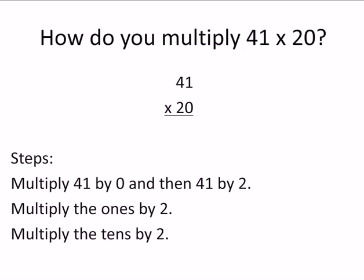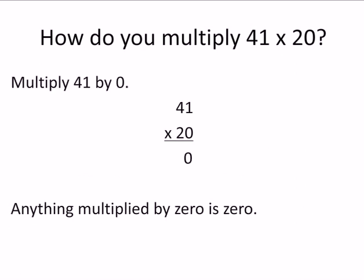Now let's multiply 41 times 20. Our steps are to multiply the 41 by the 0, and then multiply 41 by the 2. So we're going to multiply the 1's by 2 and the 10's by 2. The first step is to multiply 41 by 0, and anything multiplied by 0 is 0, so that answer is 0.